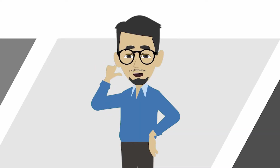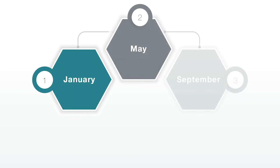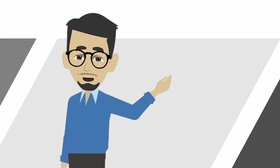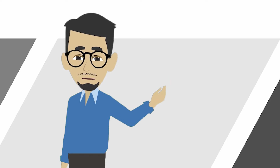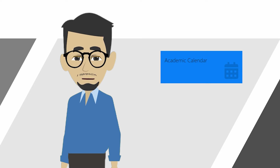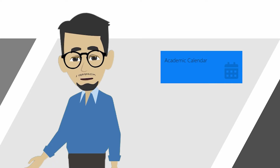At OUM, we use the trimester system, which means that each academic year has 3 semesters. Each semester starts in January, May, and September. Each semester consists of 14 study weeks and 3 exam weeks, for a total of 17 weeks per semester. You don't have to memorize all that — just refer to the calendar in My OUM for all the dates of your e-tutorials and final exams.